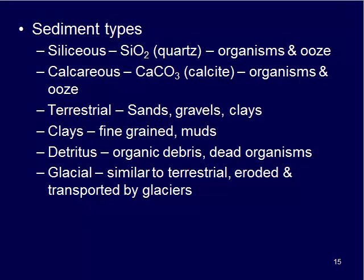We can also get very similar material but made out of calcite. Calcite is what will react to acid; it has calcium carbonate in it. These also come from organisms, and if there's a lot of dissolved calcite in the water column, we can get this calcareous ooze building up on the ocean floor as well.